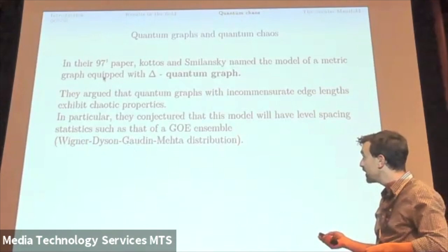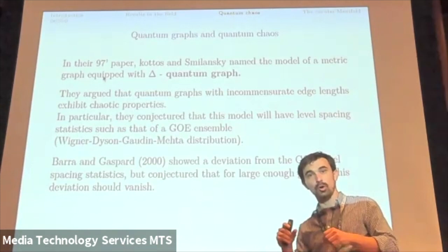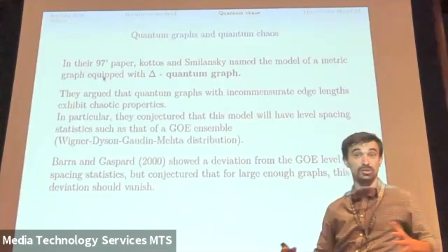This is what we call the Wigner-Dyson GOE distribution. But Bogomolny and Keating in 2000 show that it's not quite accurate. There is a slight deviation, but the deviation seems to go to zero as the graph goes larger. And it's still an open conjecture ever since, which I intend to work on.